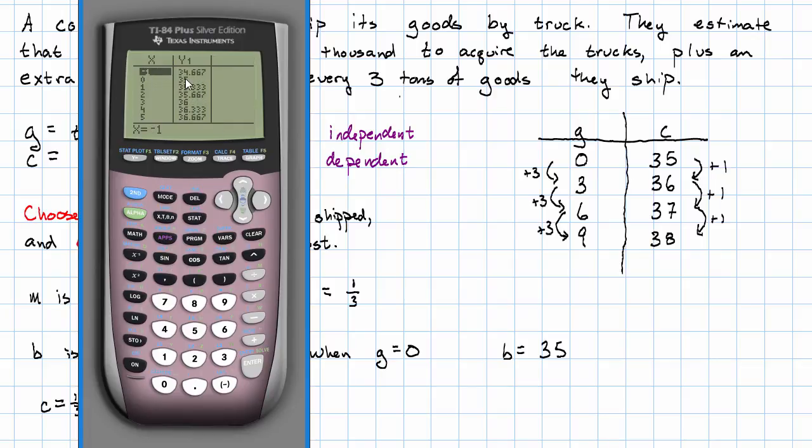And here we see x is 0, y is 35, x is 3, y is 36, x is 6, y is 37, x is 9, y is 38, the same values that we saw on our table. So that really did work.